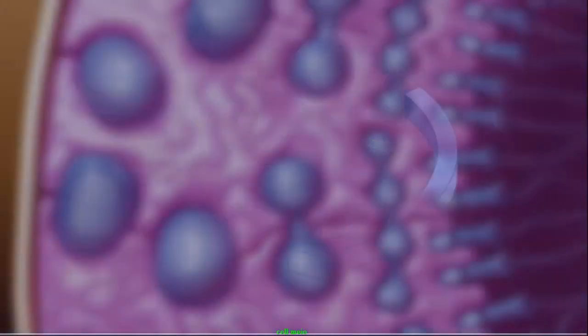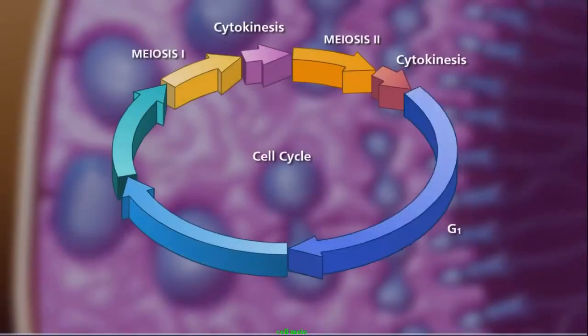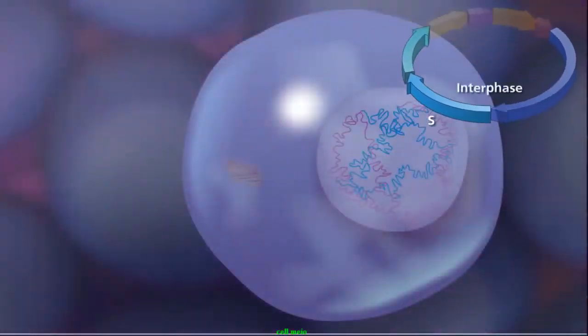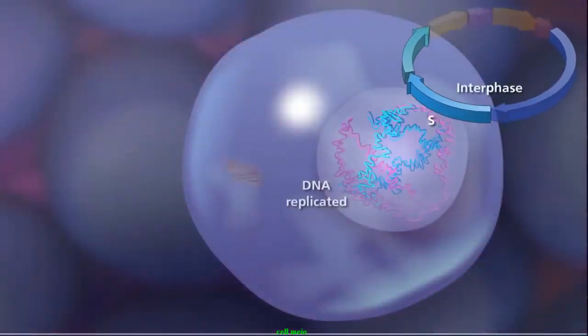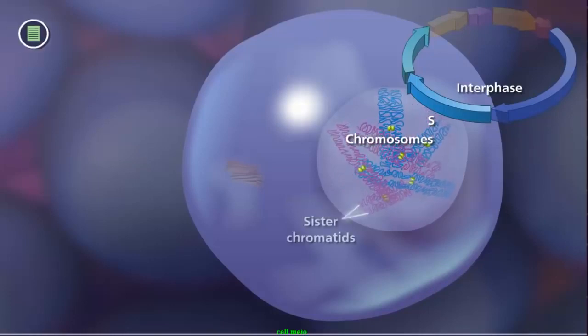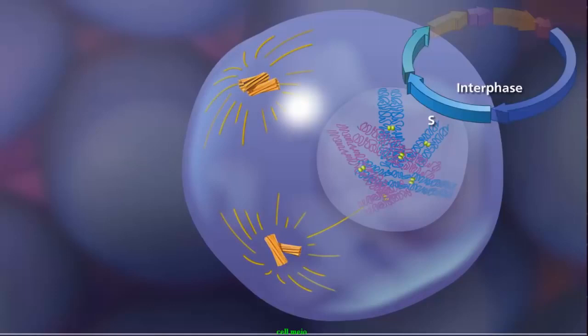As in mitosis, meiosis begins after a cell has successfully completed the G1, S, and G2 stages of interphase. During the S phase of interphase, the DNA is replicated, producing two copies of each chromosome called sister chromatids. The paired centrioles in the cytoplasm duplicate and begin extending microtubules that will form the meiotic spindle.